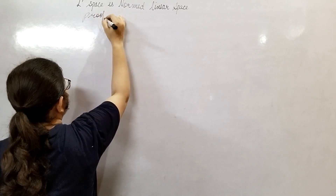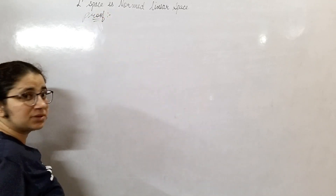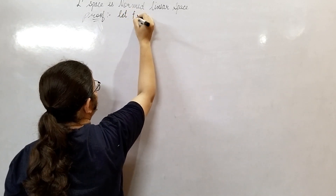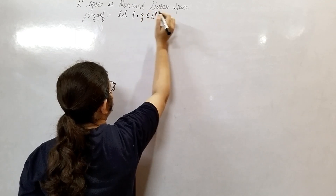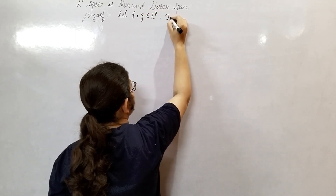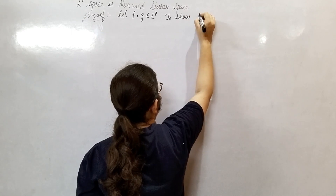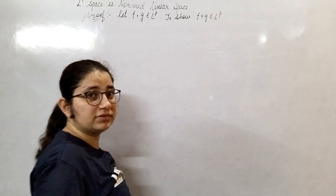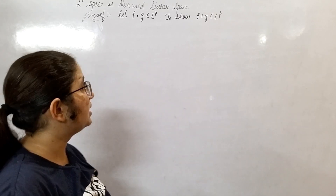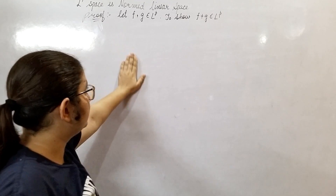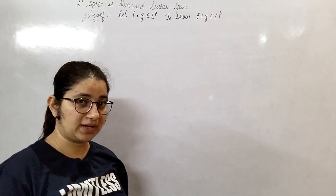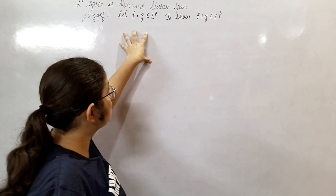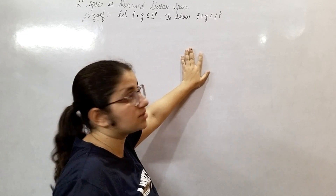LP space is a normed linear space — remember those four properties? So let f and g belong to LP space. We will show, firstly, that f plus g belongs to LP space. Before showing it is a normed linear space, that space should first be a linear space. So for LP space, we will firstly show that it is a linear space.